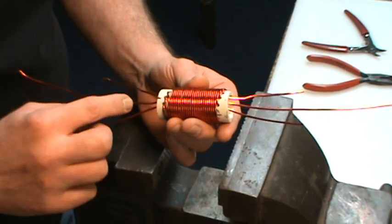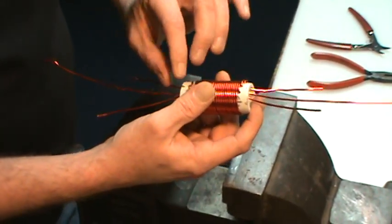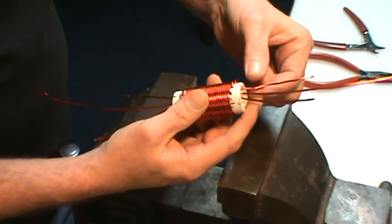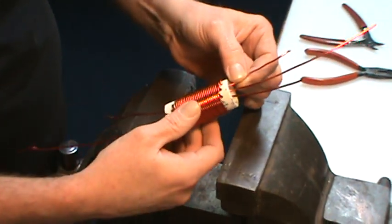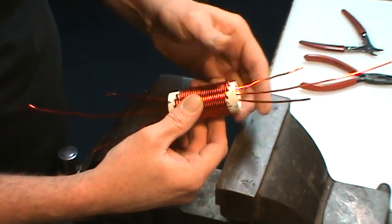Now I need to make the connections here. This wire is going to wrap up and attach to this wire, so the middle wire to this end wire up here.